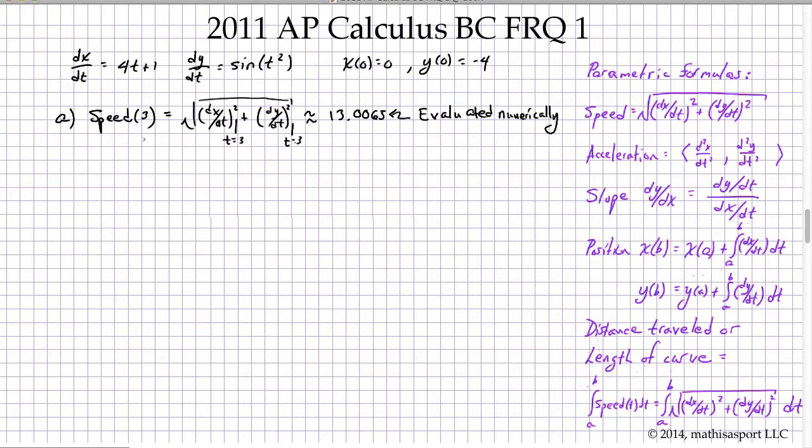Now, unlike speed, which is a single number, acceleration is a vector quantity. So we're going to write acceleration at 3, that's going to equal the second derivative of the x function with respect to time evaluated at t equals 3 comma the second derivative of the y function with respect to time also evaluated at t equals 3.